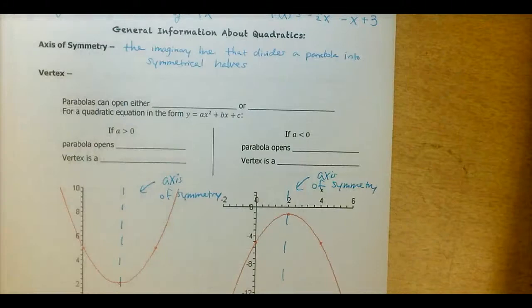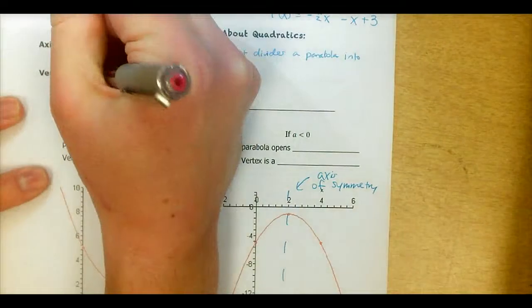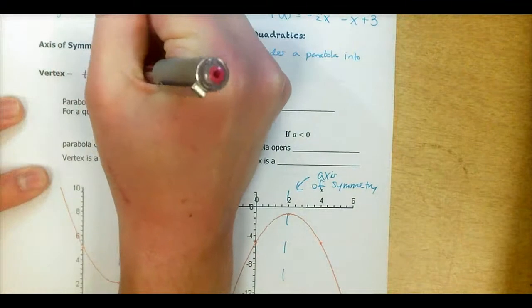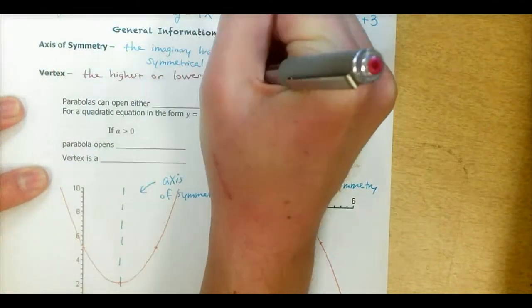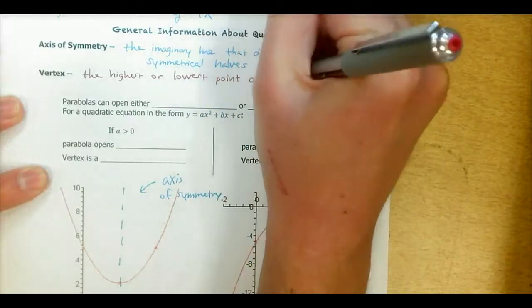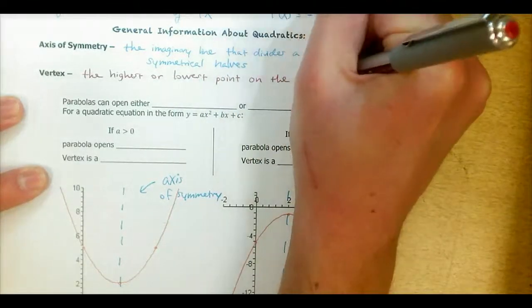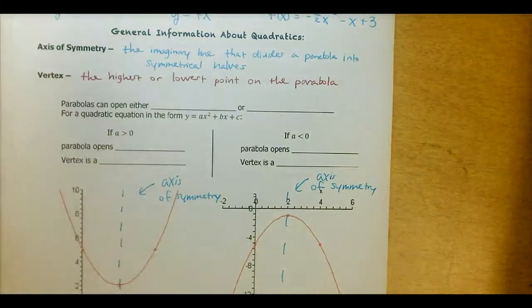We also have what's called a vertex. That's another key term we're going to use a lot in this unit. When I'm referring to the vertex of a parabola, I'm referring to the highest or lowest point on the parabola — the highest or the lowest point on the graph. A vertex is a point, meaning we use ordered pairs with parentheses to describe a vertex.